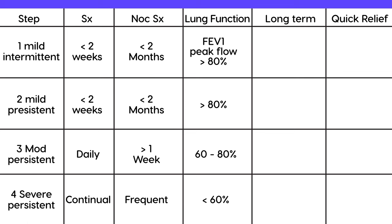For quick relief, it's the same across all steps: a short-acting beta agonist, most commonly albuterol. The albuterol inhaler is used as quick relief for all four steps. Now for long-term treatment: Step 1 requires none — the person just uses their albuterol inhaler as needed.